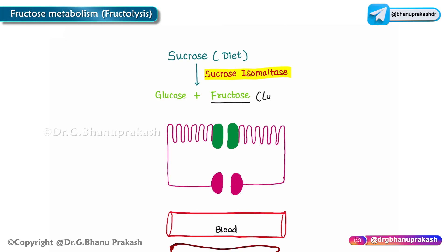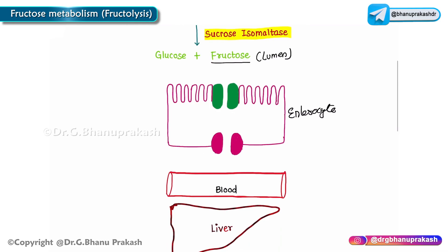The fructose formed at the intestinal lumen must enter into the enterocyte. There is a transporter called glucose transporter 5 (GLUT5), which faces the intestinal lumen and transports fructose into the enterocyte by facilitated diffusion.